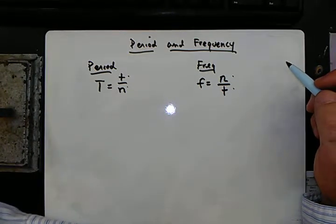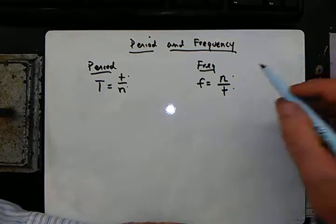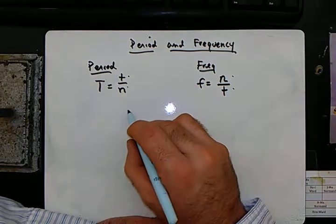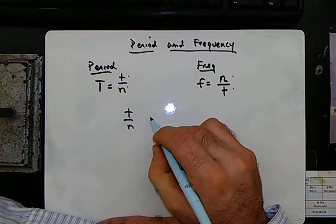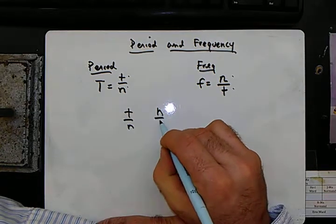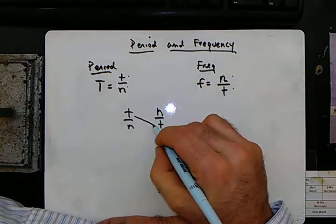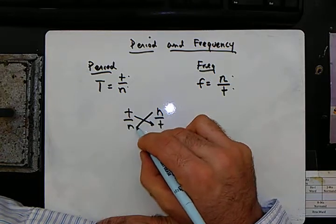So these are very similar. They're actually exactly opposite of each other. So t over n, n over t, we've got this type of deal going on here.